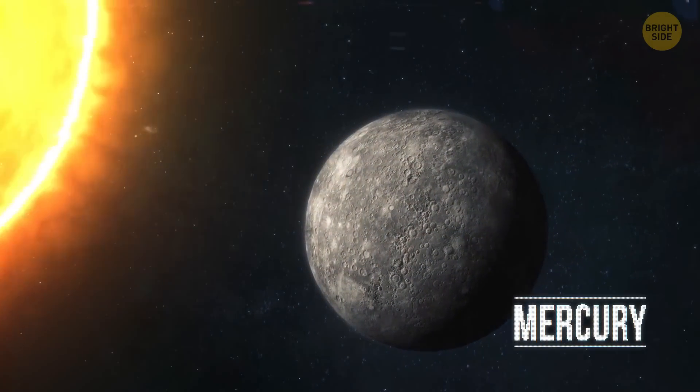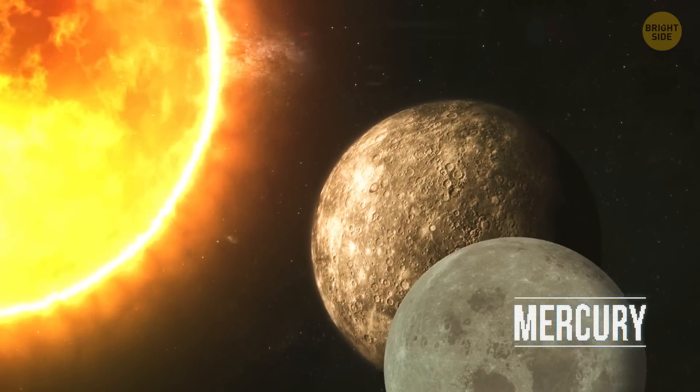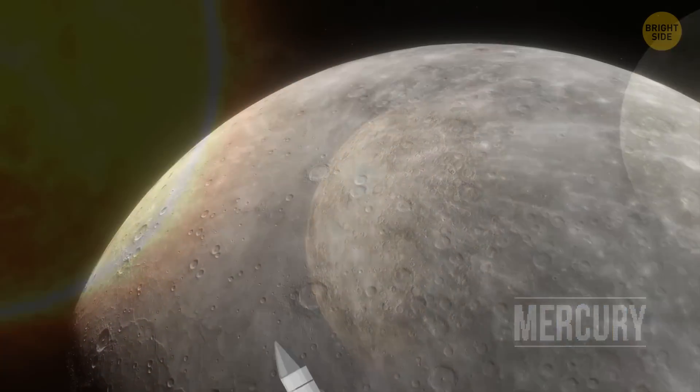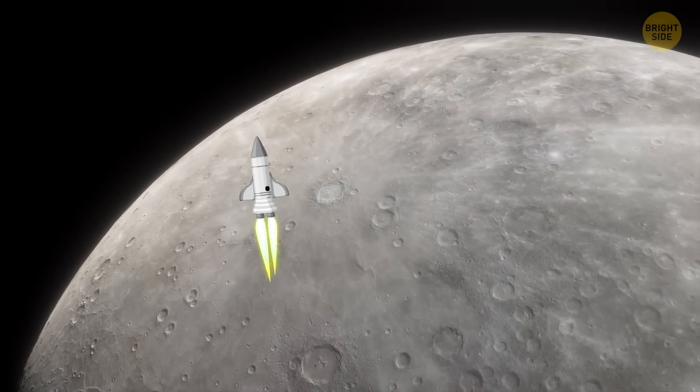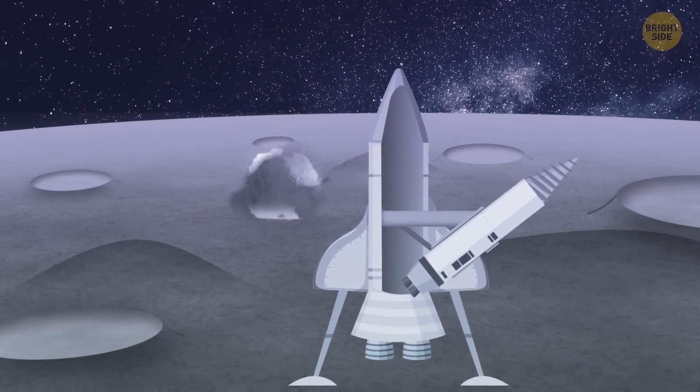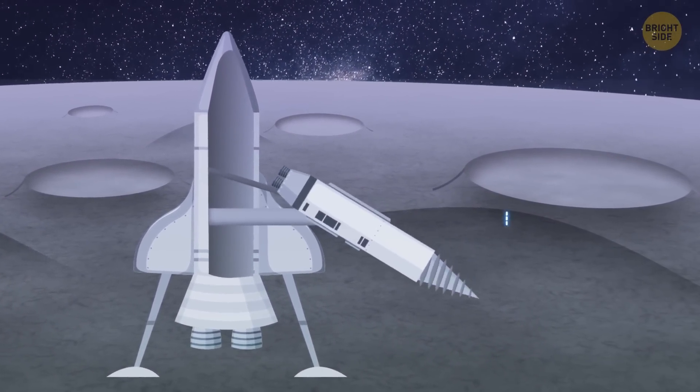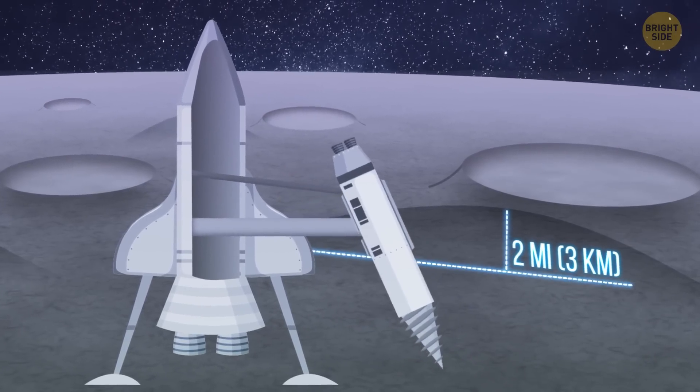You start with Mercury. It's the closest planet to the Sun. At first sight, the place looks similar to our good old Moon. But after landing, you understand it's an illusion. All around your spaceship, there are craters left by meteorites. The planet's surface is littered with huge steep hills. Some of them are 2 miles high and stretch for hundreds of miles.